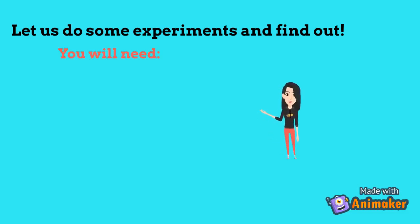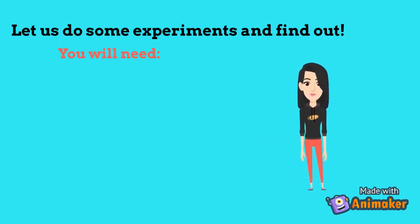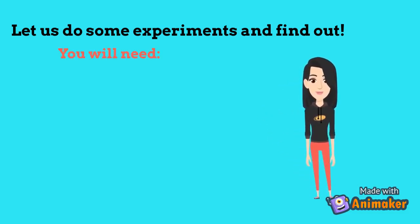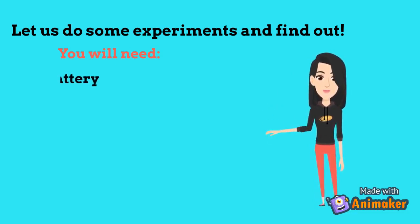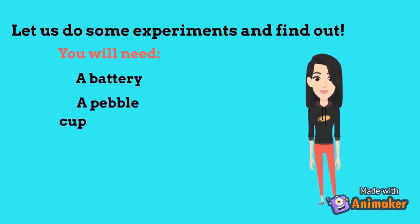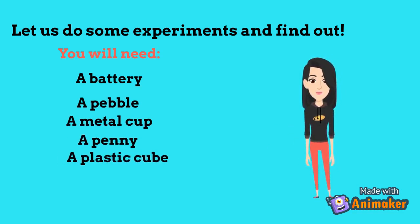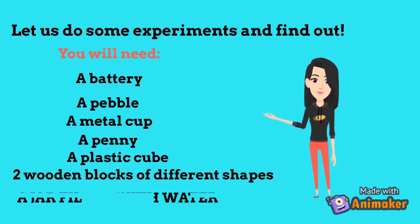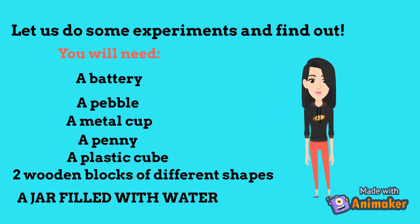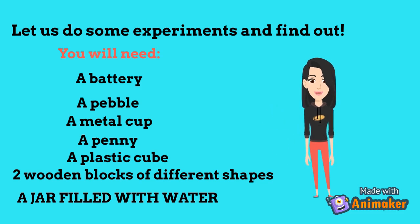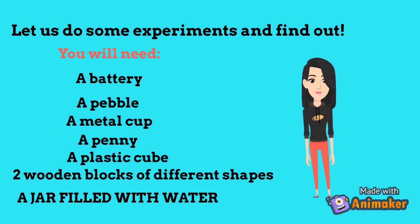Let's do some experiments to find out. We're going to need a battery, one pebble, a metal cup, a penny, a plastic cube, two wooden blocks of different shapes, and a jar filled with water. Now, let's put each object in water and record whether it floats or sinks.